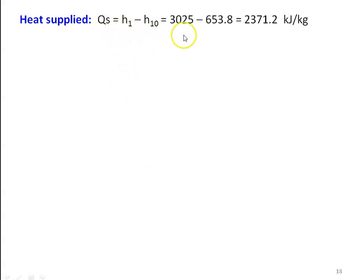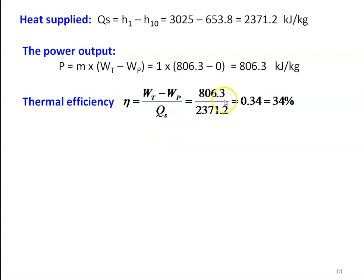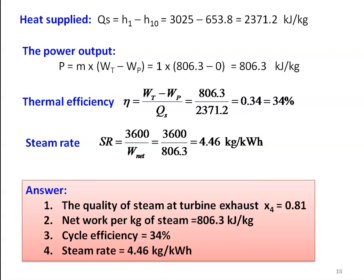Heat supplied Qs equal to H1 minus H10 equal to 3025 minus 653.8 equal to 2371.2 kJ/kg. Since pump work is zero, net work output equals turbine work equal to 806.3 kJ/kg. Thermal efficiency equal to Wt divided by Qs equal to 806.3 divided by 2371.2 equal to 0.34, which is 34%. Steam rate Sr equal to 3600 divided by net work output equal to 3600 divided by 806.3 equal to 4.46 kg/kWh. The answers: quality at turbine exhaust X4 equal to 0.81, net work equal to 806.3 kJ/kg, cycle efficiency equal to 34%, steam rate equal to 4.46 kg/kWh.